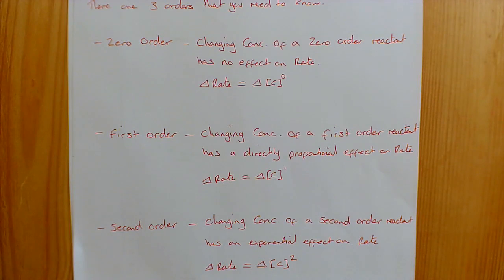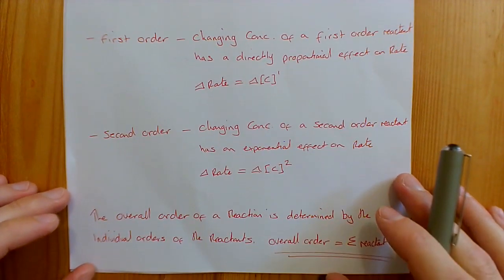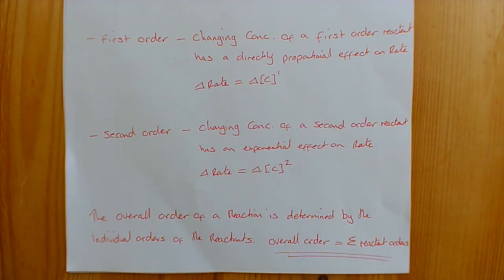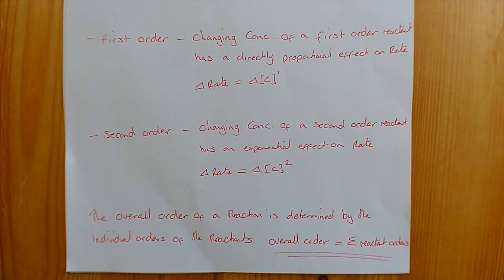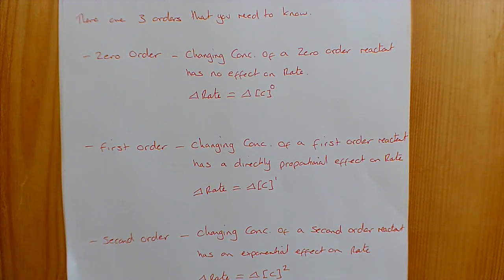For individual reactants, some are zero order, some are first order, some are second order. If you want to know the overall order of a reaction, you just add up the sum of all the individual reactant orders. For example, if a reaction has two reactants and they are both second order, the overall order would be four. If it has three reactants — first order, second order, and zero order — the overall order would be three.